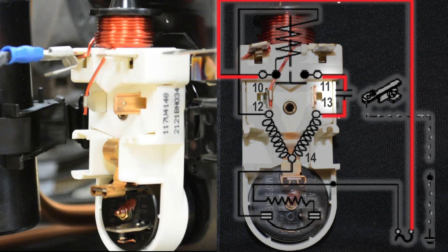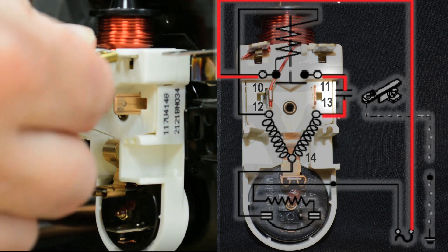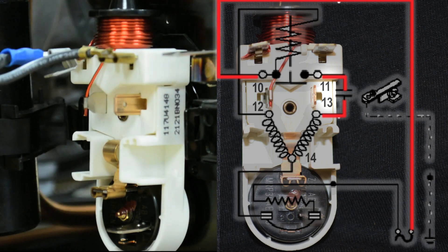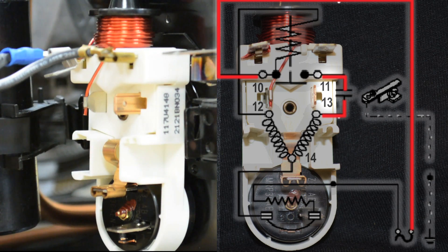Next we'll wire in the start capacitor in series between numbers 11 and 13 on the start relay, which will assist in starting the compressor energizing the start winding.